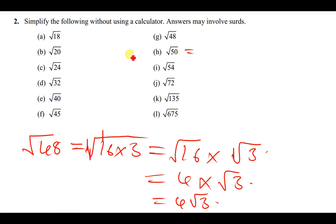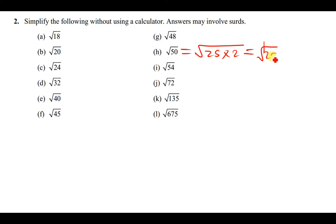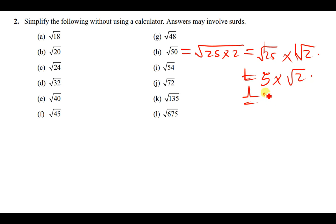For √50: which perfect square can go into 50? 25 can do that. So this can be written as the square root of 25 times 2, which is the square root of 25 times the square root of 2. The square root of 25 is 5 times the square root of 2, so the answer is simply 5√2.